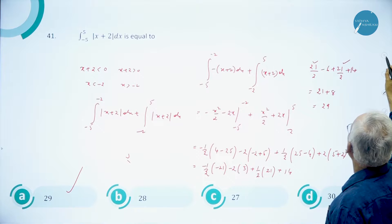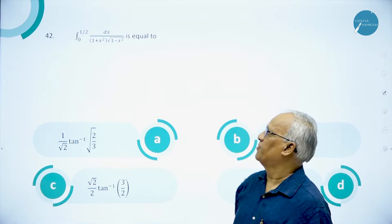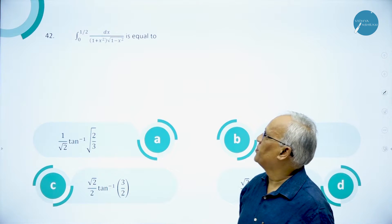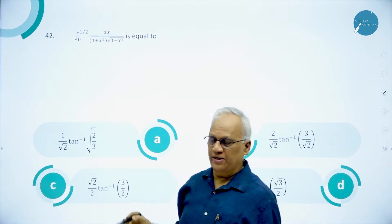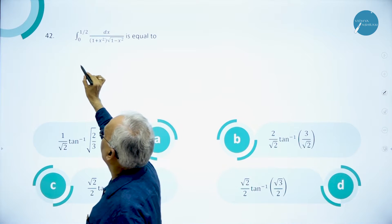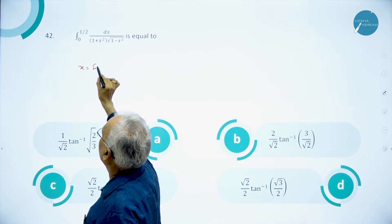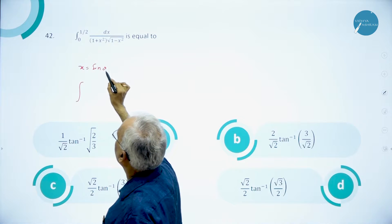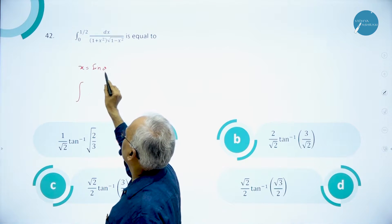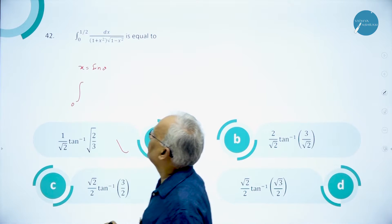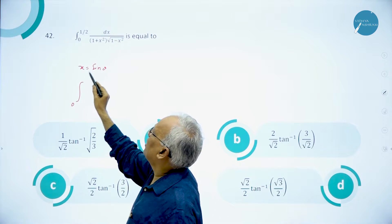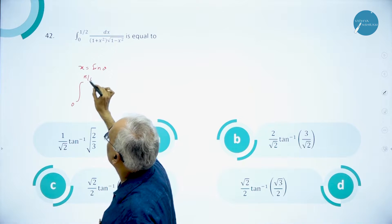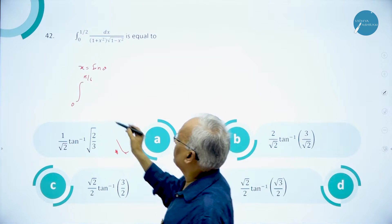We go to the 42nd question: integral from 0 to 1/2 of dx / [(1+x²)√(1-x²)]. When you have √(1-x²), you can simplify by taking x = sinθ. When x=0, sinθ=0 so θ=0; when x=1/2, sinθ=1/2 so θ=π/6. Change the limits whenever you use substitution. dx = cosθ dθ.